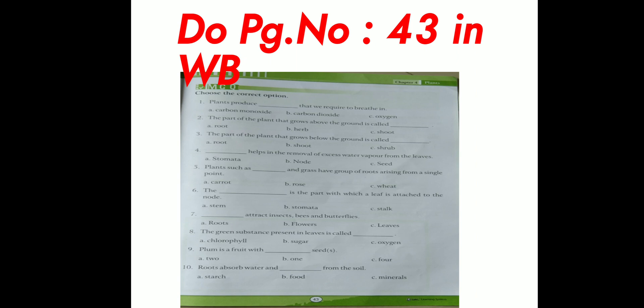Fifth question. Plants such as dash and grass have group of roots arising from a single point. Option A, carrot. Option B, rose. Option C, wheat.